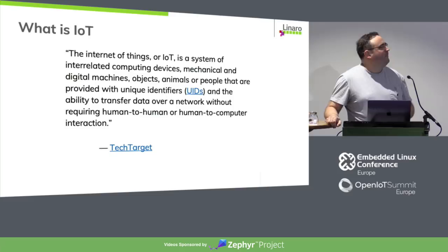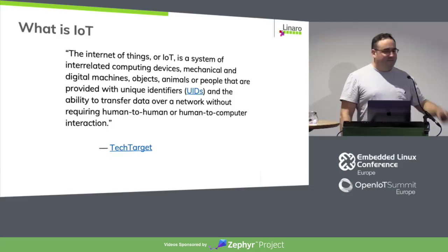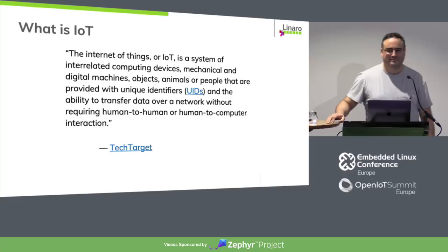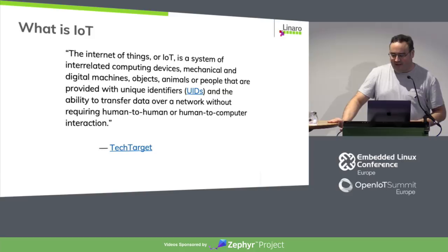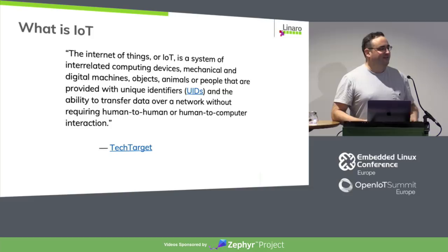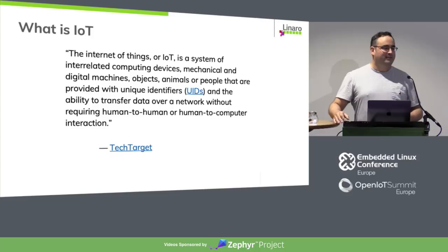So to start with, what is IoT? I did a search for that exact expression and found a definition — maybe as good as any other. Not everybody agrees on what it means, but the basic idea is things that are connected to the internet, hence the term. The key takeaway from the definition is that we're talking about things connected to the network that talk to each other without human intervention — and that's the big difference. Unlike a computer you sit at, these devices are on their own.